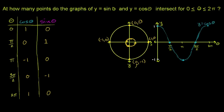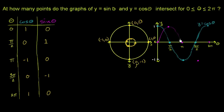Now for sine theta: at θ = 0 it's 0, at π/2 it's 1, at π it's 0, at 3π/2 it's −1, and at 2π it's 0. The graph of sine of theta looks like a smooth wave shifted relative to cosine.